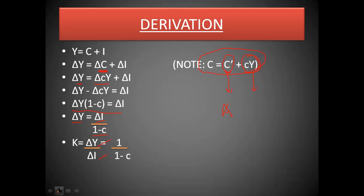This ratio shows that if the value of the denominator — the marginal propensity to save (s) — is small, the multiplier value will be huge. Since 1 − c = s, we can write K = 1/s. If s is less than 1 and small, the multiplier is large. If savings are increasing relative to consumption, the level of the multiplier will be less.